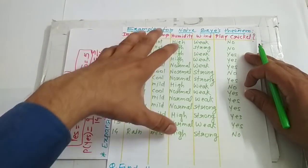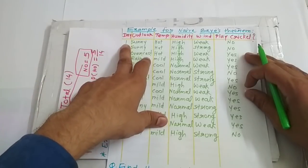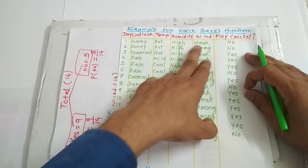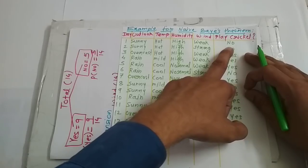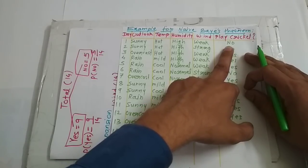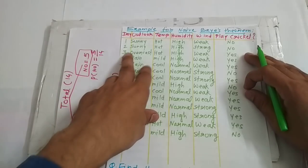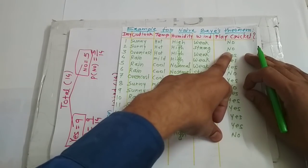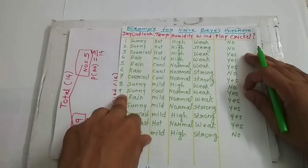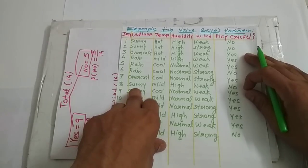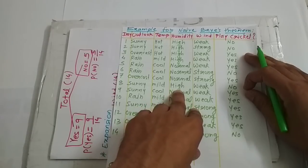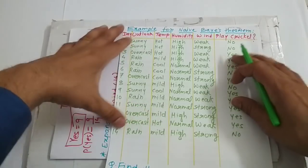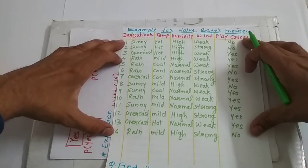This table gives us 14 days of information. For example, on the first day, the outlook was sunny, temperature was hot, humidity was high, wind was weak — did we play cricket? No. Similarly, on the second day, outlook was sunny, temperature was hot, humidity was high, wind was strong — play cricket? No. For example, on the eighth day, outlook was sunny, temperature was mild, humidity was high, wind was weak — whether to play cricket? No. This is the data for a total of 14 days.